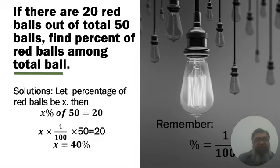Let's solve this. We can say that 20 red balls are x percent of 50. So, x percent of 50 is equal to 20.